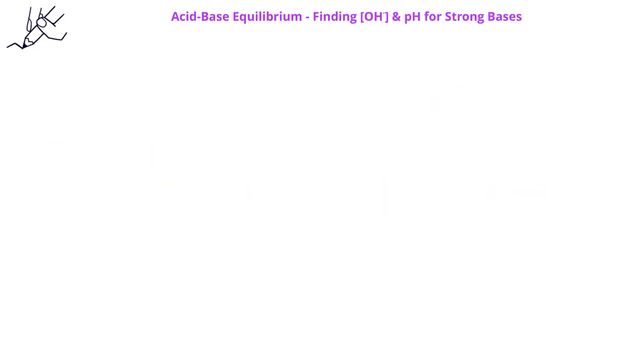Let's look at an example of finding the pH of a strong base solution. In this problem, we're asked to find the pH of a 0.047 molar strontium hydroxide solution. We begin by identifying if the base is either strong or weak. Since the base is strontium hydroxide and that's one of the six strong bases that we have in our memorized list, we know that this is a strong base.